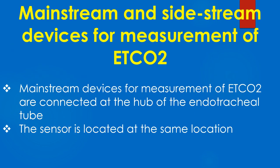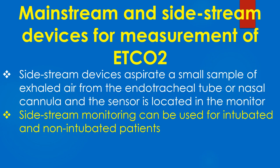There are mainstream and sidestream devices for measurement of ETCO2. Mainstream devices are connected at the hub of the endotracheal tube, and the sensor is located at the same location. Sidestream devices aspirate a small sample of exhaled air from the endotracheal tube or nasal cannula, and the sensor is located in the monitor. Sidestream monitoring can be used for both intubated and non-intubated patients.